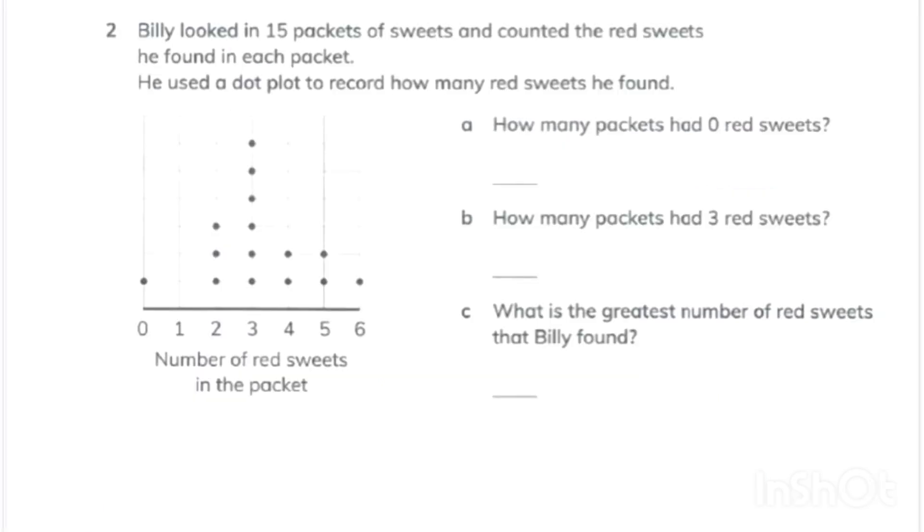Billy had 15 packets of sweets and he started looking in these packets that how many red sweets in each packet. Number line represents the number of red sweets in the packet. Let's answer the questions. How many packets had zero red sweets? You can see one has no red sweets, so we'll write one. How many packets had three red sweets? Six packets had three red sweets. And for C, six is the maximum red toffees that Billy found.